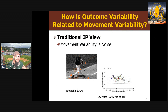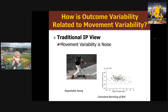The traditional information processing motor program view is that movement variability is noise. We want a consistent outcome — in all views, that's what we want. I'm illustrating it with my favorite example, baseball batting. The consistent outcome we want is consistent barreling of the ball — we want the ball to hit the sweet spot on the bat every time. The traditional view is that to achieve this, we need to practice until we get a repeatable swing; the goal is to make variability in the movement as low as possible.